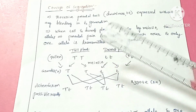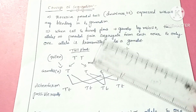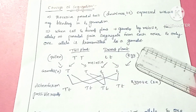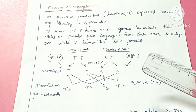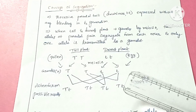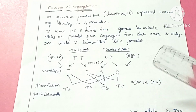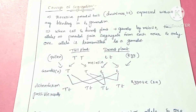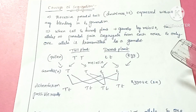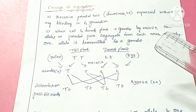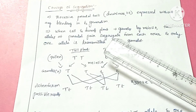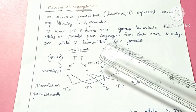Hello everyone, this is Latha Agula. In the last videos we completed about monohybrid cross, in which we studied about what is homozygous, heterozygous, phenotype, genotype, dominant and recessiveness. The next concept is the concept of segregation.